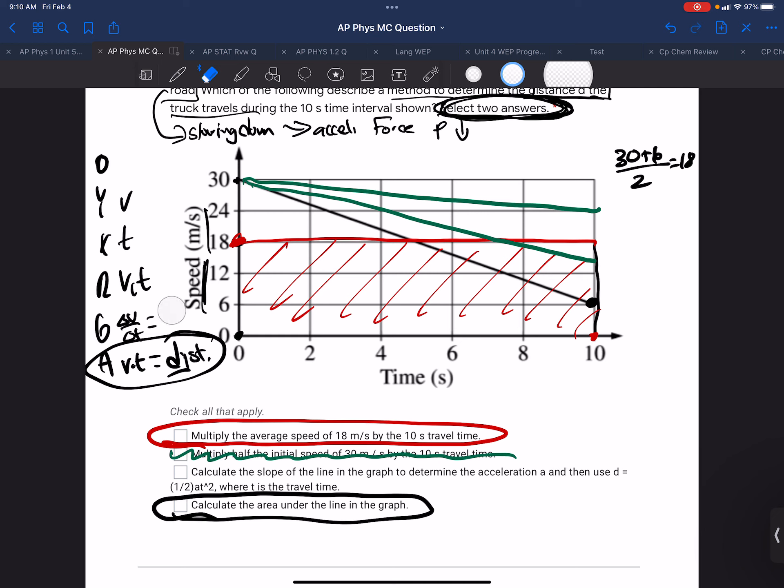Calculate the slope of the line. The slope of the line is the acceleration. And then use the formula d equals one half a t squared. Well, our formula for position is one half a t squared plus v₀t plus x₀. Now, we could say the distance is one half a t squared if the initial position is zero, which is reasonable. But it must also be true that the initial speed is zero, which it's not. So we can't use that one because the initial speed is not zero.